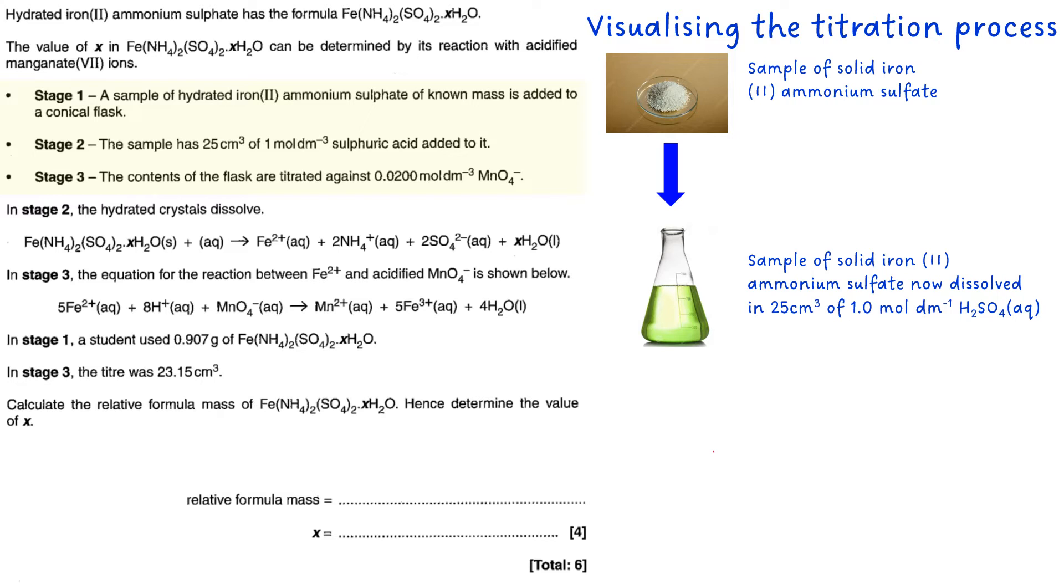Now that in itself doesn't mean you have to work out the moles of H2SO4. That's incidental information, because all you're doing is you're providing the large number of moles of hydrogen ions that are needed in the reaction. That's where the H2SO4 comes in. So then this is titrated against 0.02000 moles per decimetre cubed MnO4⁻.